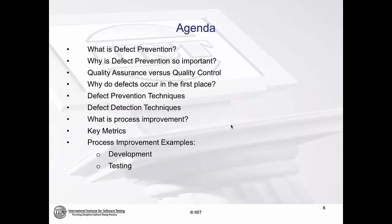What we're going to cover over the next hour: understanding more about defect prevention and why it's so important. We'll talk about the differences between QA and QC. We'll spend time identifying why defects occur in the first place. We'll give an overview of defect prevention techniques and defect detection techniques. We'll talk about process improvement. Then we'll jump into understanding what are the key metrics that drive process improvement, with examples from the development as well as the testing perspective. It's a pretty packed agenda.